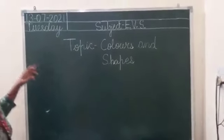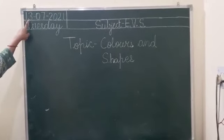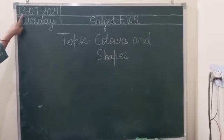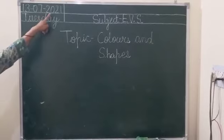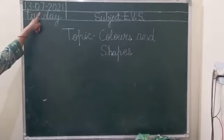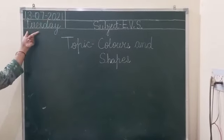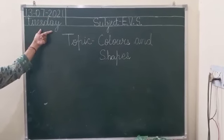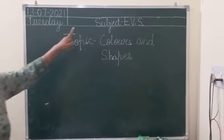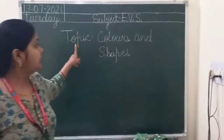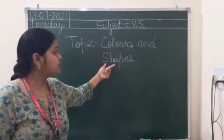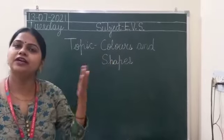Now students, look here. What is the date today? Today is 13th July 2021. July means 7th month. Today is Tuesday. Subject EBS. In subject EBS today we will do the revision of colors and shapes that we have already done.